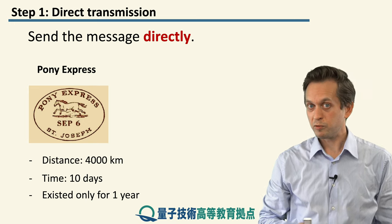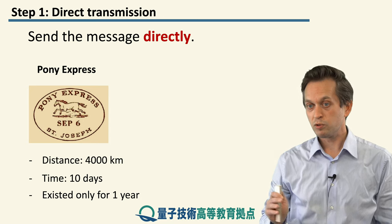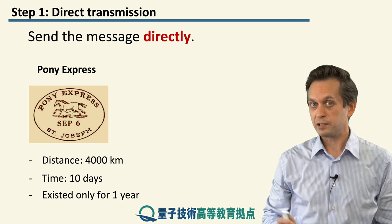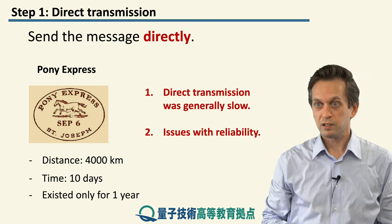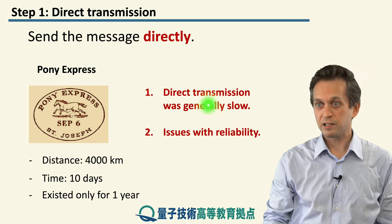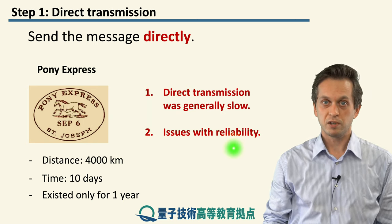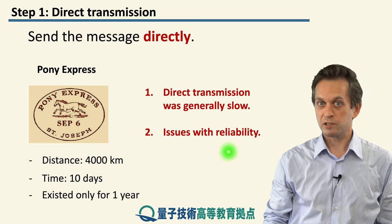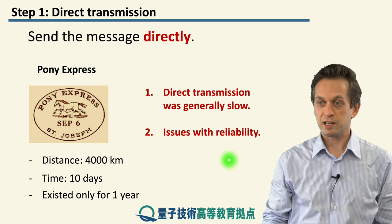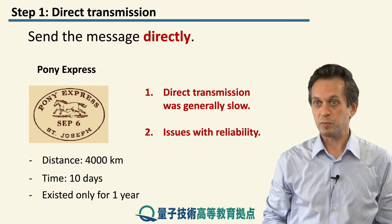The Pony Express was short-lived because the method of communication changed from direct transmission to electrical telegraphy. Sending a message directly is generally slow and has reliability issues — you may lose your pigeon, or your runner can get exhausted and give up. So people had to find different ways of sending messages.